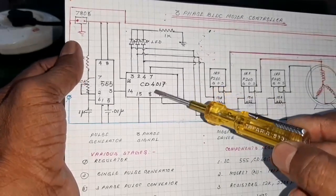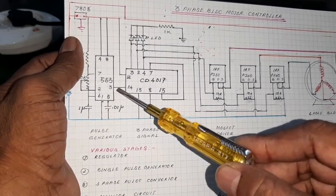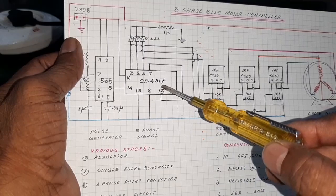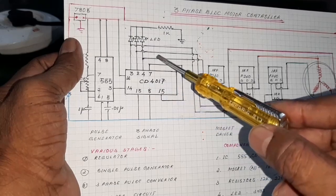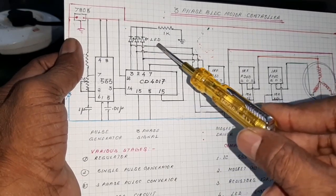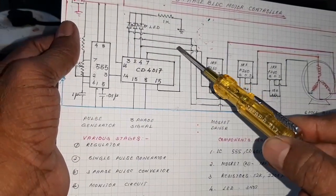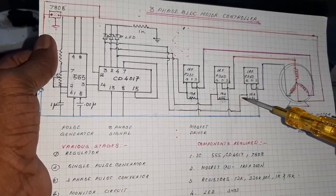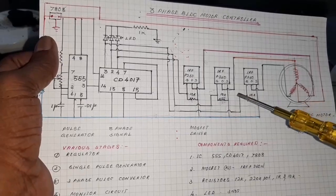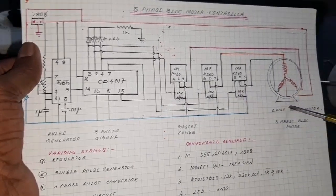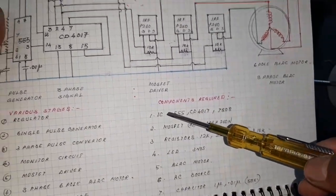Here the single-phase pulse is given to the CD4017 decade counter. It converts to three-phase pulse like this. Here look at this, the three LEDs are used for monitoring the three-phase. And here the three-phase output is given to the MOSFET drive, three MOSFET gates, and the output of the MOSFET is given to the BLDC motor.